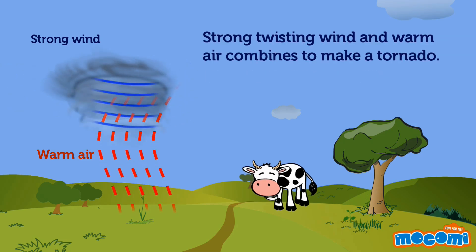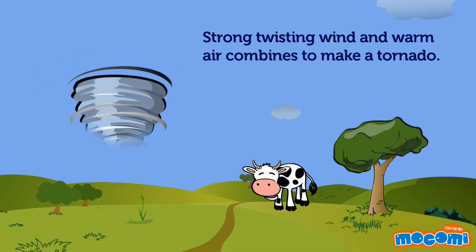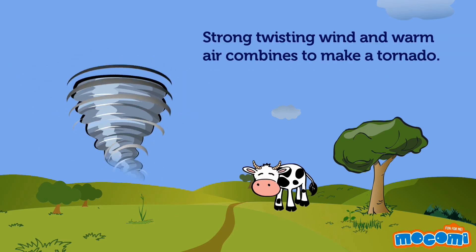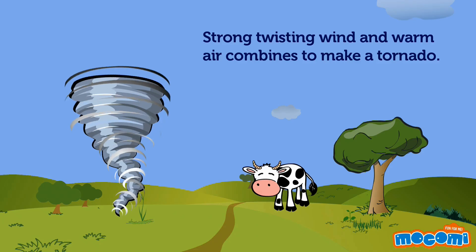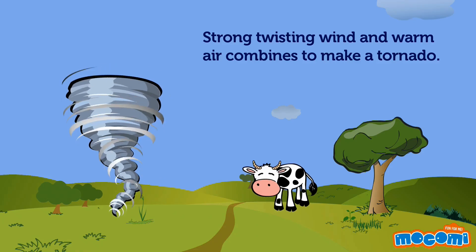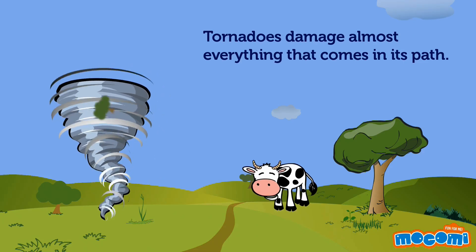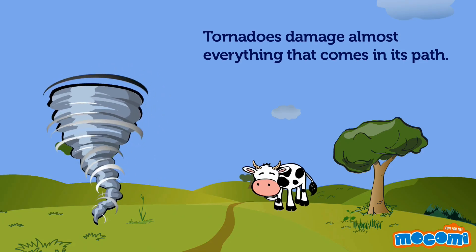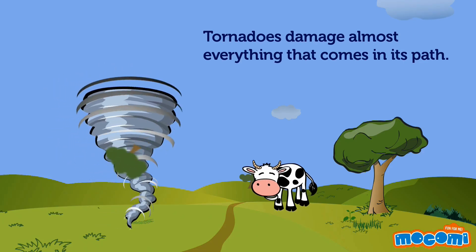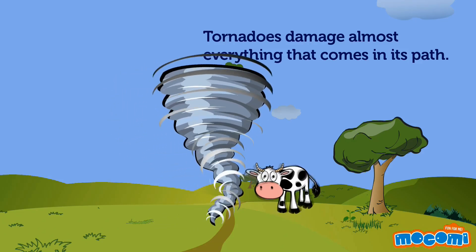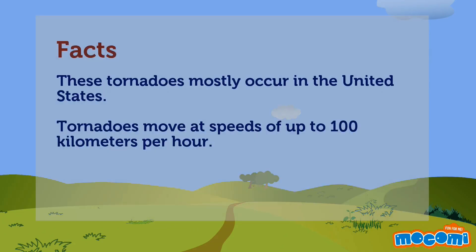Strong twisting winds and warm air combine to make a tornado. Tornadoes damage almost anything that comes in their path. These tornadoes mostly occur in the United States, and they move at speeds of up to 100 km per hour.